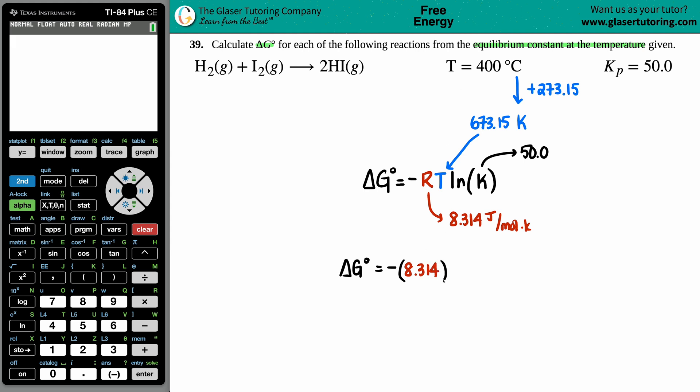and then times by your temp, which is 673.15, and then times by your ln, your natural log of 50.0.